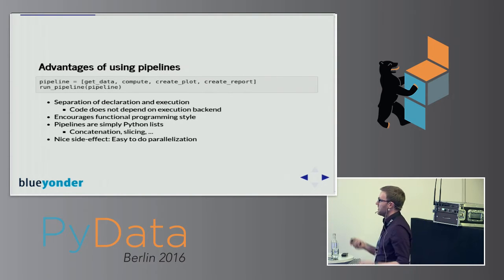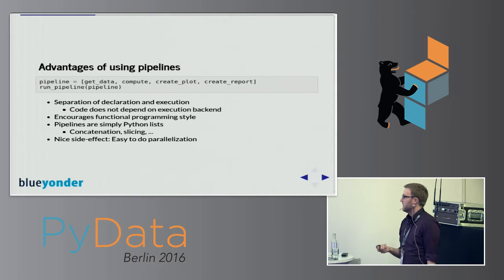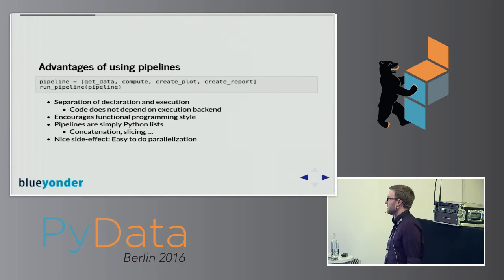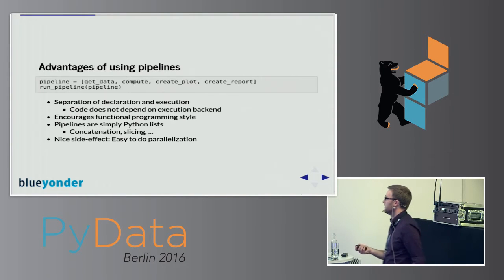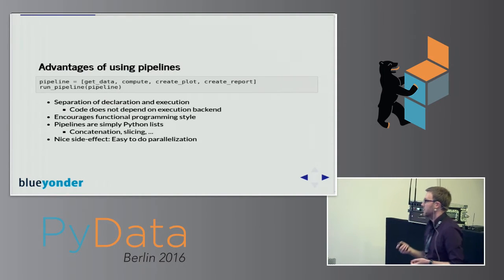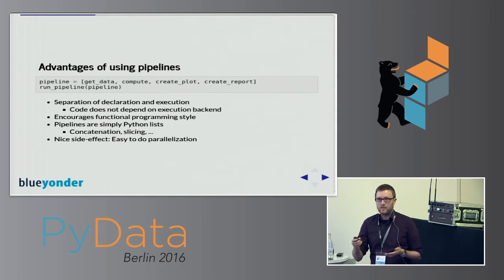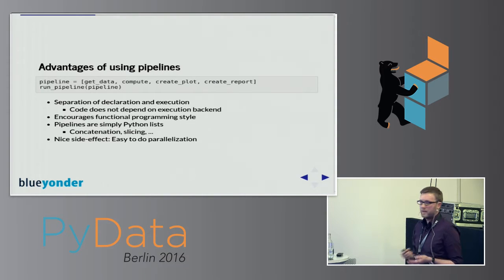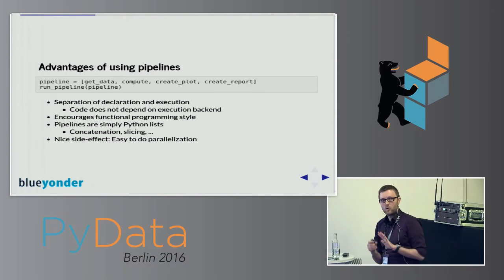This approach also encourages a functional style of programming — whether you're a fan of that or not, there are obvious advantages such as testability. Another nice thing is that pipelines are just Python lists, so we can do all standard list operations: slicing, concatenation, whatever you want. A nice side effect we didn't even really intend is that it's very easy to do parallelization, because only the backend has to take care of that and the individual functions don't need to know anything about it.